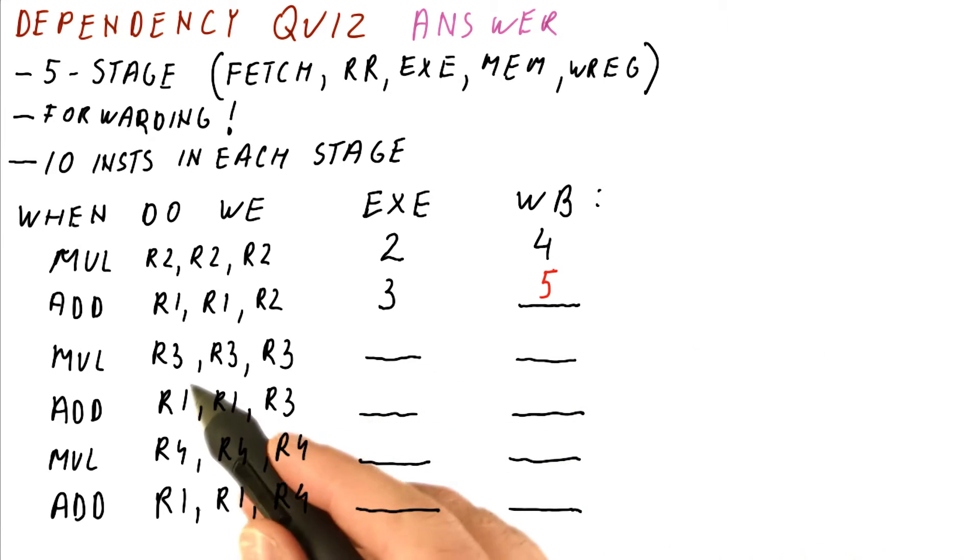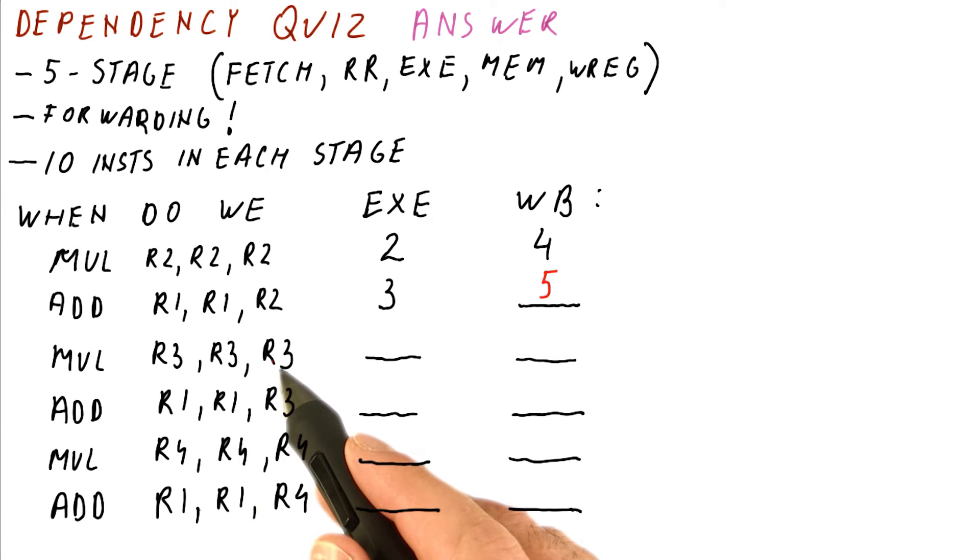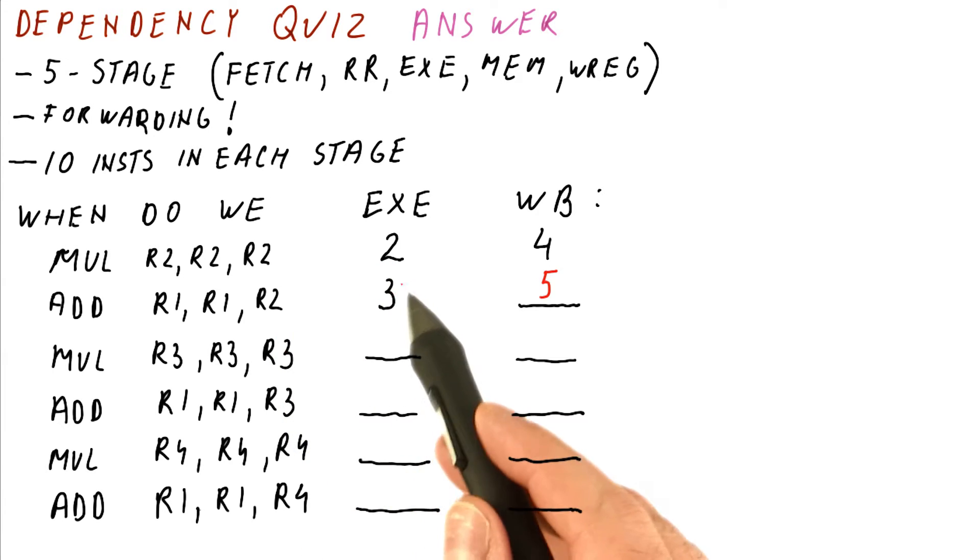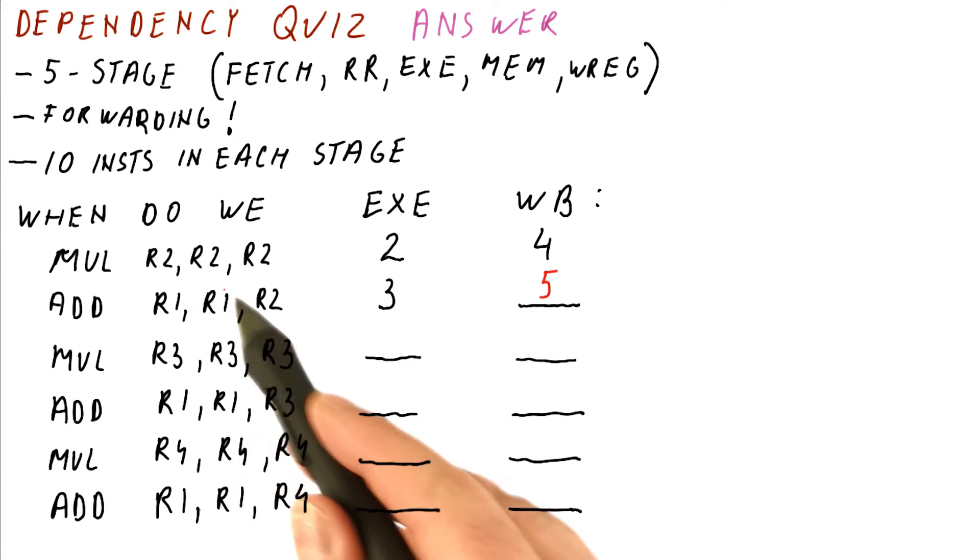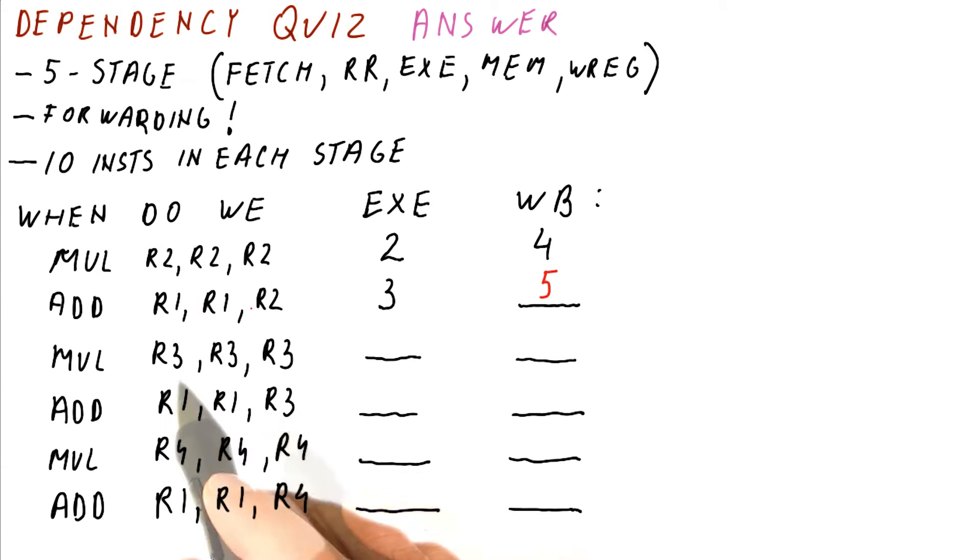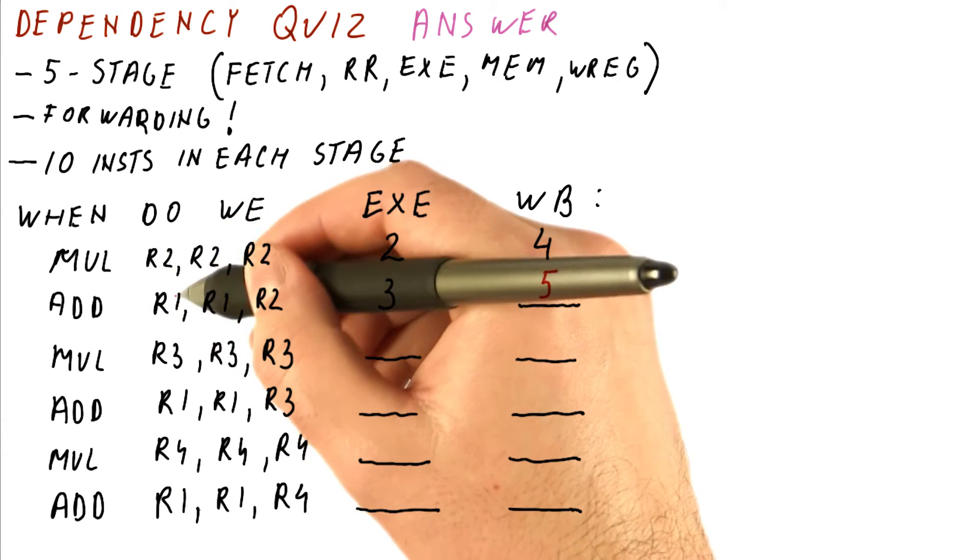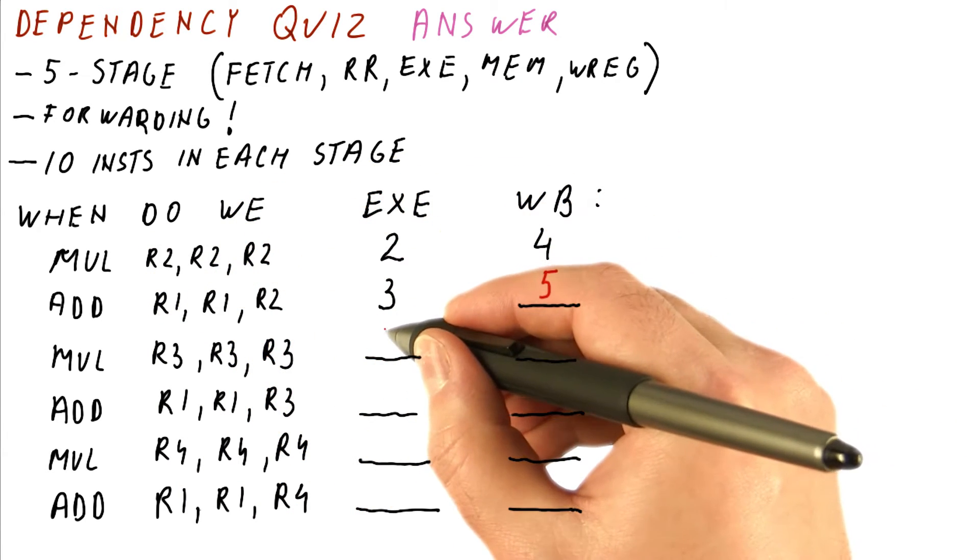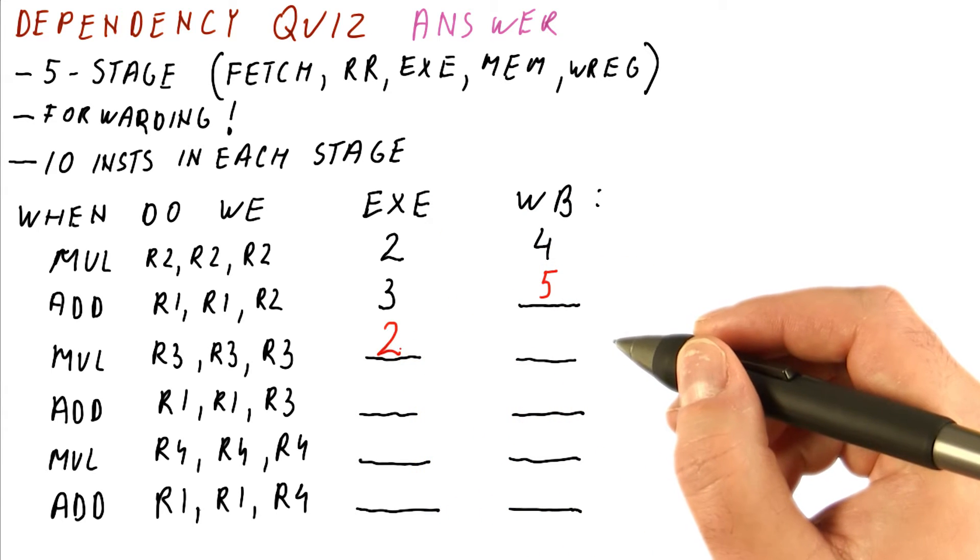Now let's look at this multiplication instruction over here. Remember, we can execute any number of instructions in the same cycle. The reason why we had to delay the add is because it actually has this dependence from R2 to R2. The multiplication is using only R3 and producing R3. Using R3 has no problem because neither the MUL nor the ADD are producing R3, so this multiplication can actually execute in cycle two.